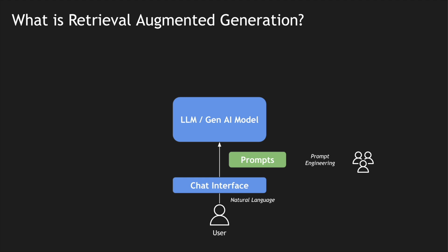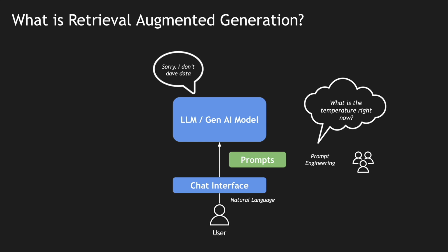However, there are some cases where you want to get dynamic information. For example, if I asked this LLM what is the temperature right now — when you train an LLM, you train it with a predefined dataset. This LLM may not be able to answer dynamic questions because temperatures are changing constantly, and the LLM doesn't know where to source that data from. So the LLM responds with 'sorry, I don't have that data.' These pre-trained LLMs don't have information about dynamic changes.